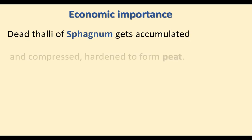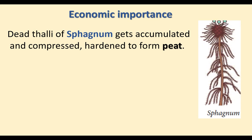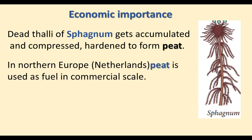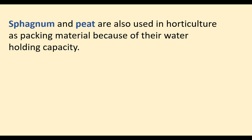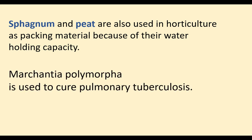Dead thalli of Sphagnum accumulate, are compressed and hardened to form peat. Peat is obtained from Sphagnum and is used as a fuel commercially in North Europe. Nitrates, brown dye, and tanning materials are derived from peat. Sphagnum and peat are also used in agriculture and horticulture as packing material because of their high water-holding capacity. Marchantia polymorpha is used to cure pulmonary tuberculosis (TB of the lungs).